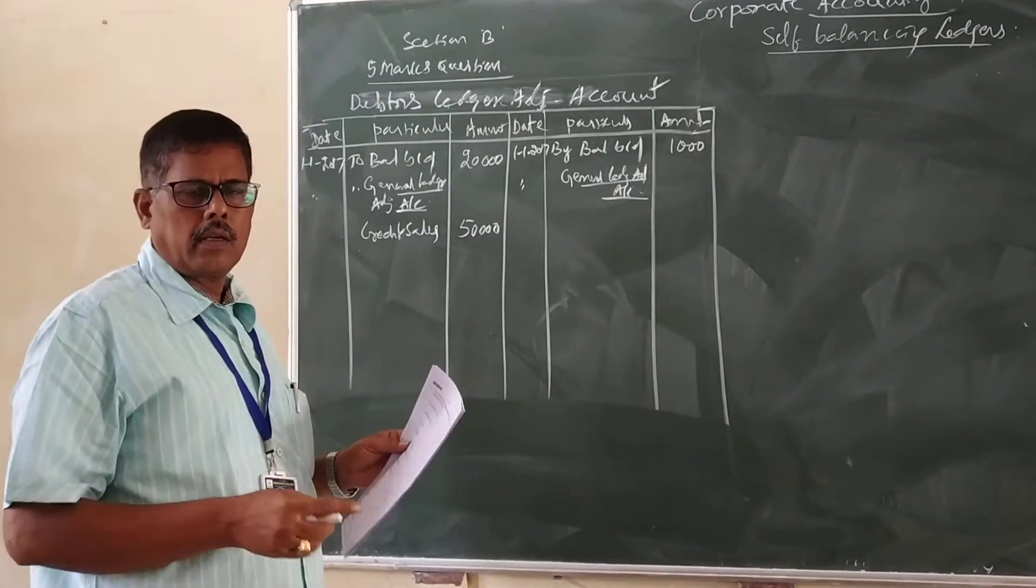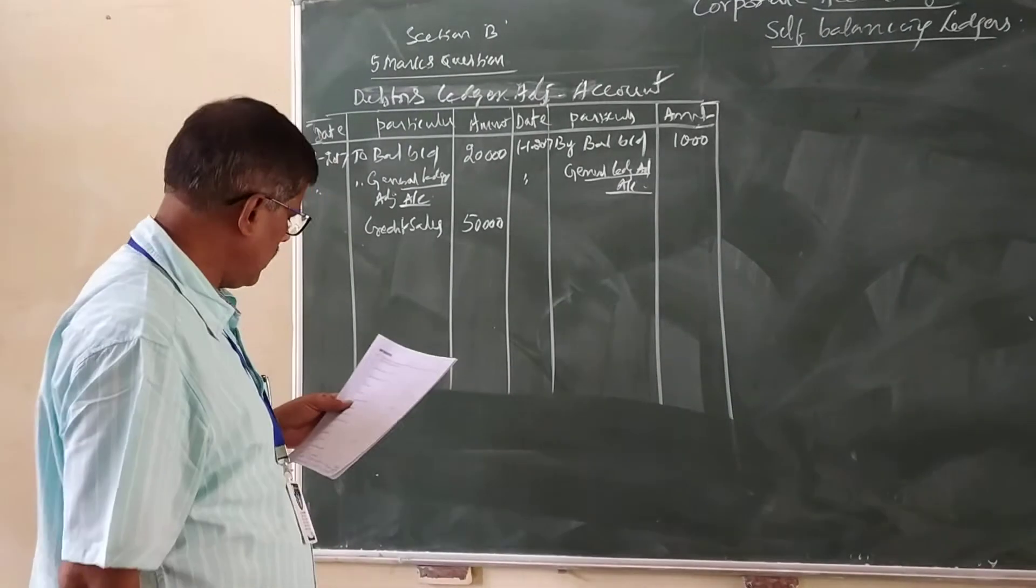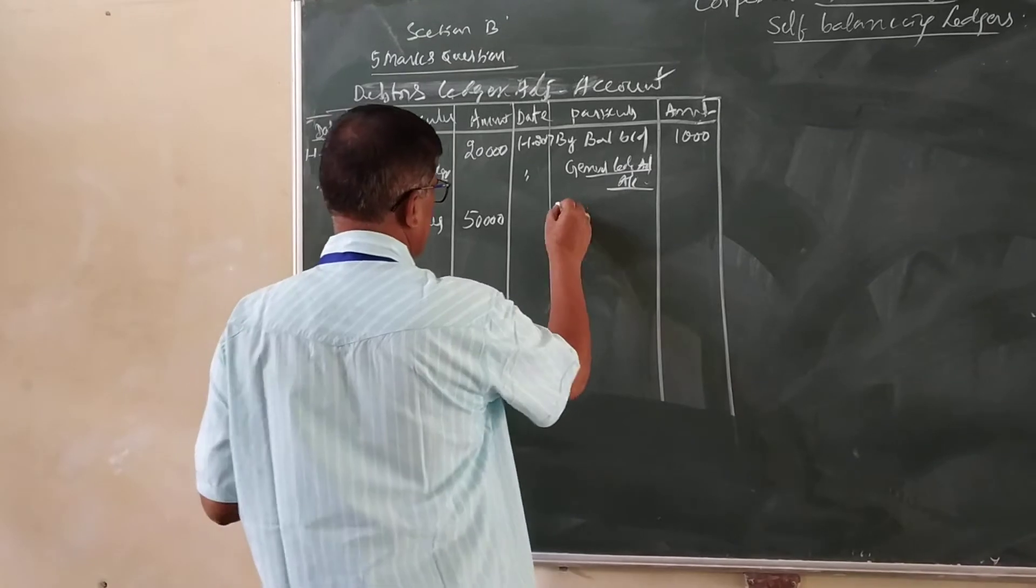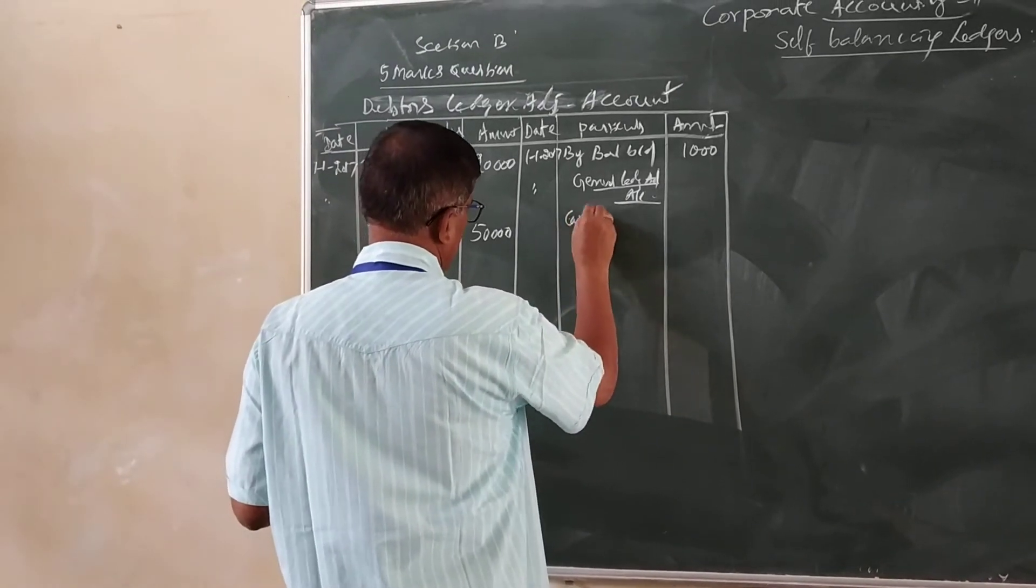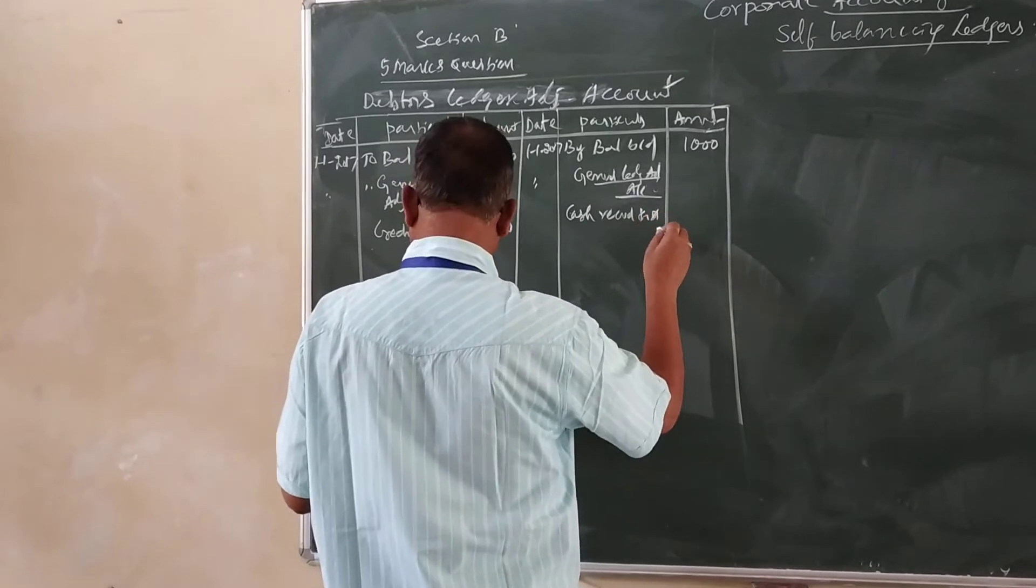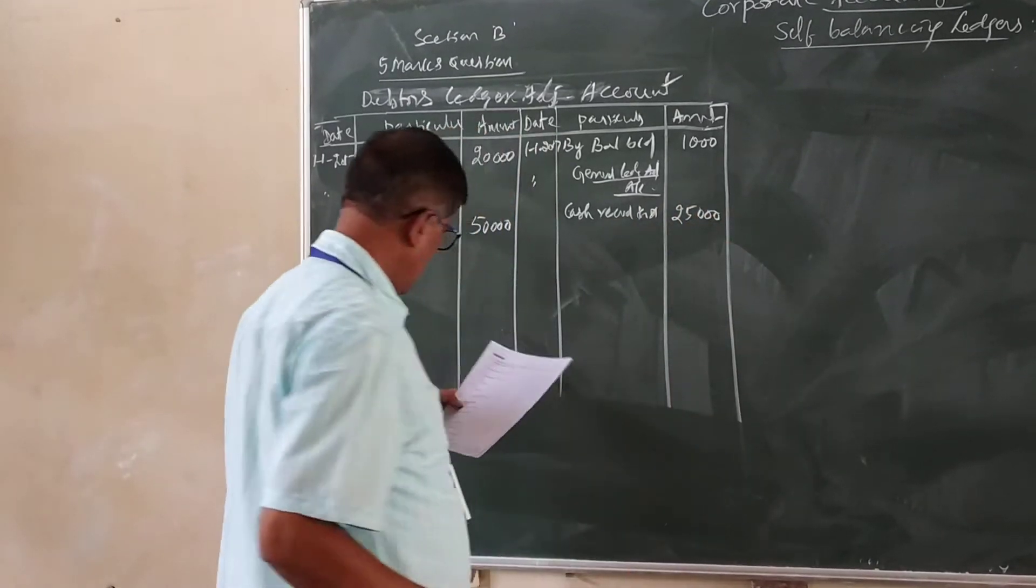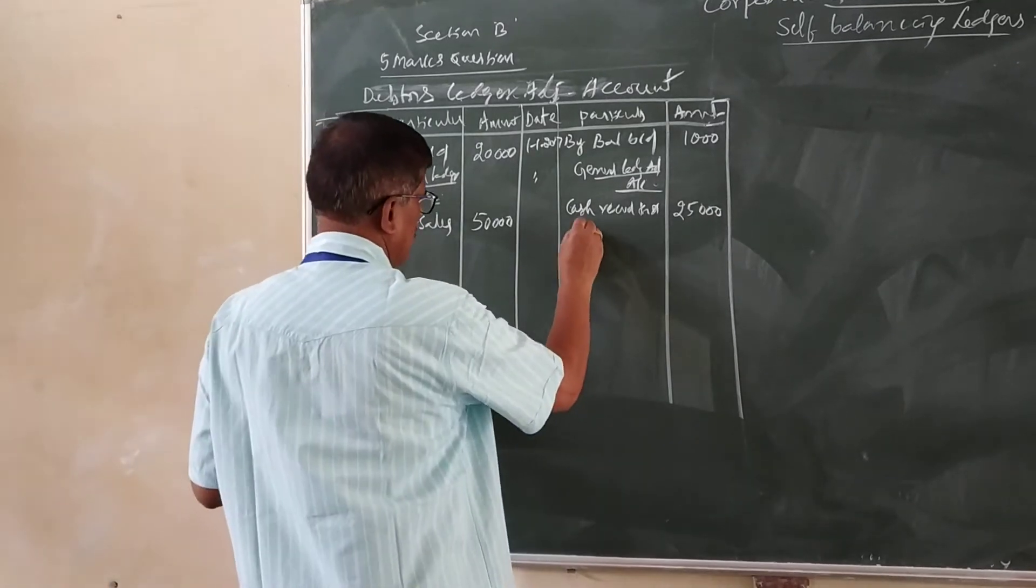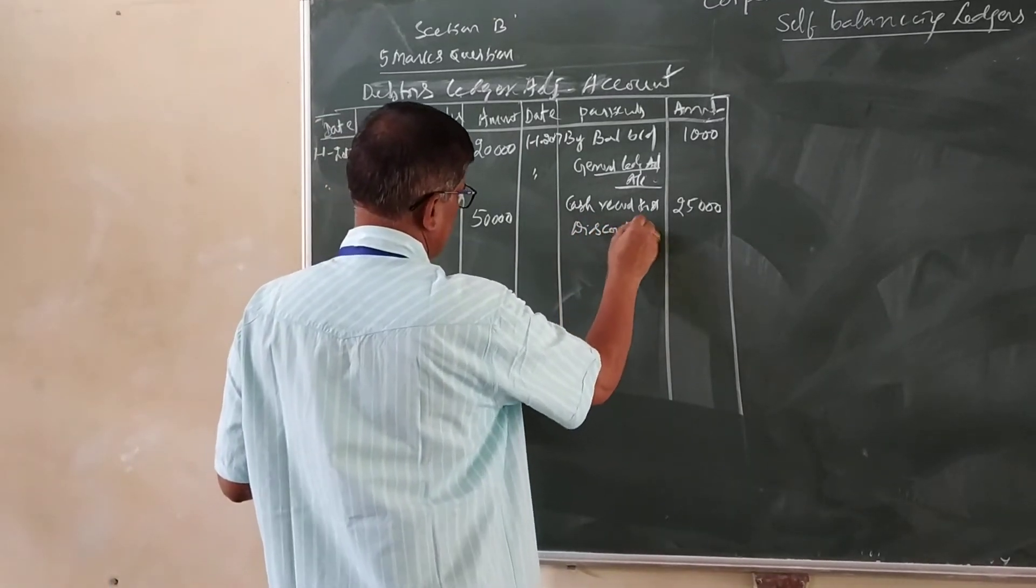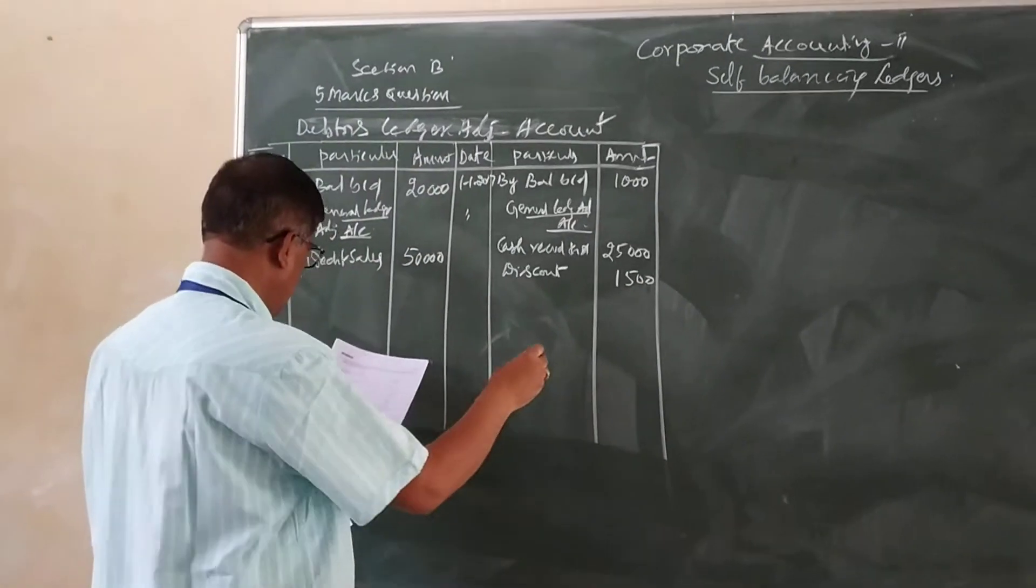Cash sales, remember, cash sales is ignored because it goes to cash book. Cash received from debtors 25,000. Discount allowed 1,500 rupees.